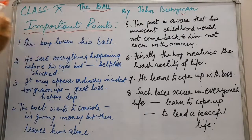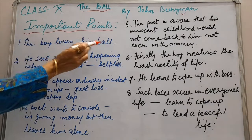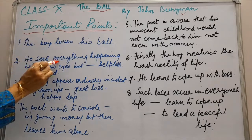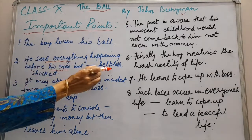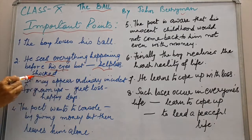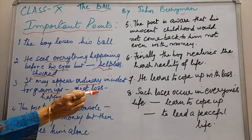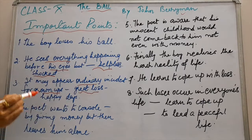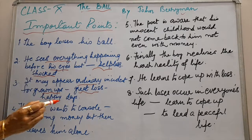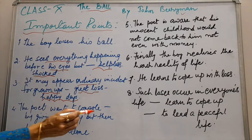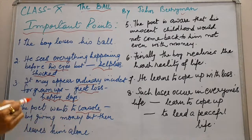Here are the important points of the poem. The boy loses his ball while playing near the harbour. The ball goes into the water. He sees everything happening before his eyes but he is helpless and shocked as he is not able to retrieve the ball. It may appear an ordinary incident to a grown-up but it is a great loss for the child, because the ball symbolizes childhood and the boy has lost his happy days like the ball. The poet, watching from a distance, wants to console him and has sympathy with him.